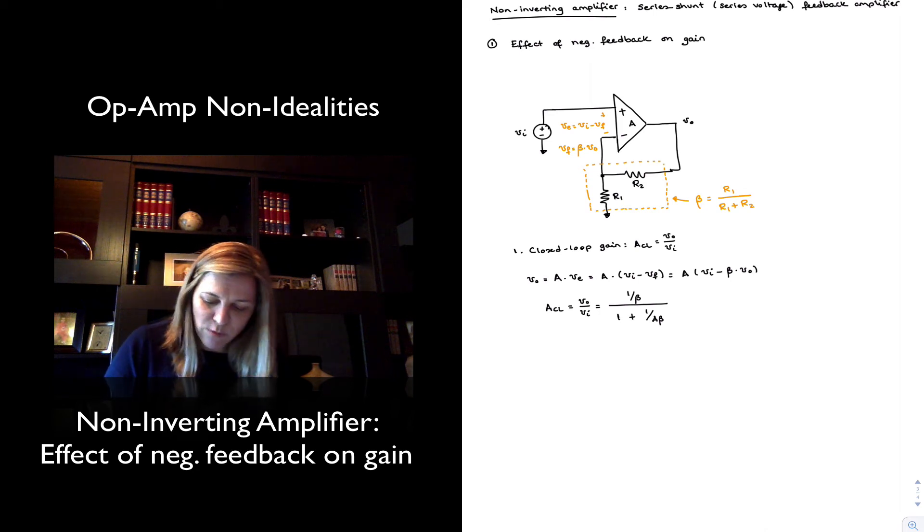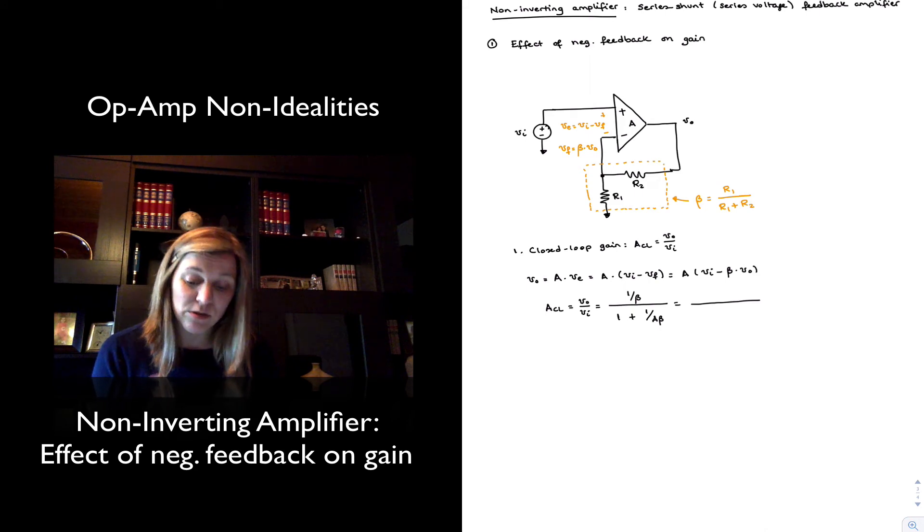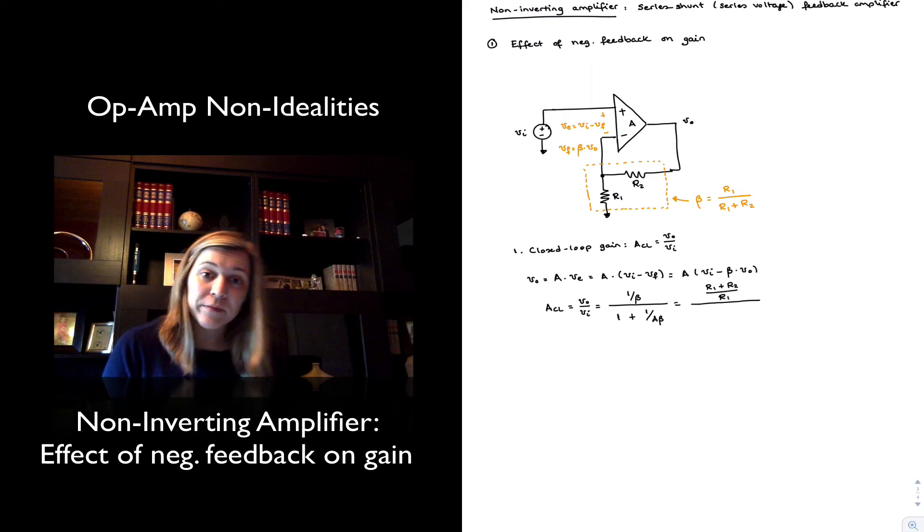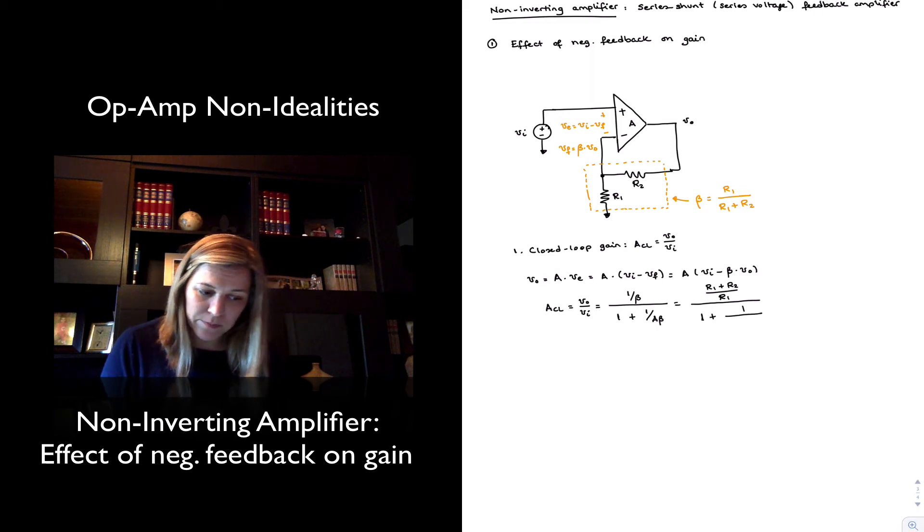Same expression as before, but let's see what that means in this case. I have one over beta. If beta is R1 divided by R1 plus R2, then one over beta is R1 plus R2 divided by R1, and all that divided by one plus one over A times beta.